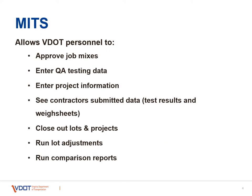Here is a list of some of the things that VDOT personnel staff would do: logging into MITS, approving the job mixes, entering the QA test data to share back to the contractor, project information, the weigh sheets, closing out lots in projects, and then running comparison reports, lot adjustment reports, and all those things that will come into pay adjustment as needed.